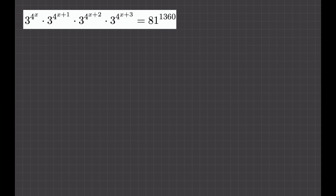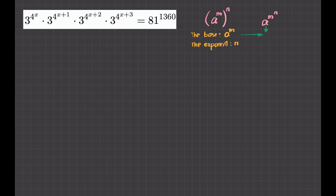Now let us try to solve the problem. The important point of this question is something I want to describe. If I write a to the power of m to the power of n, in the first case the base is a to the power m and the exponent is n. But in the second case, the base is a and the exponent is m to the n. That's the important point here.